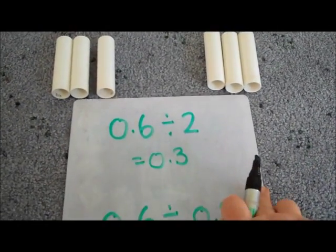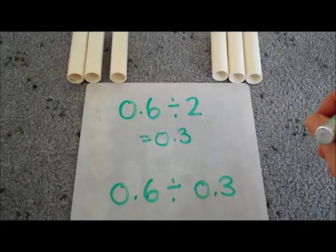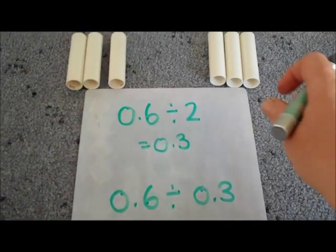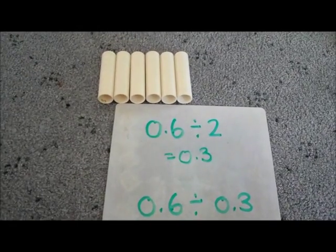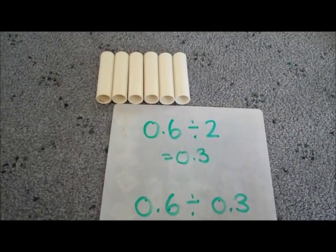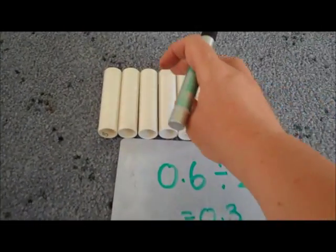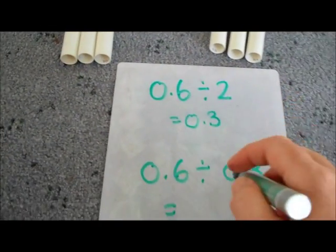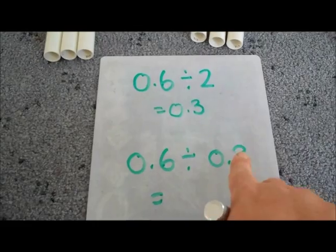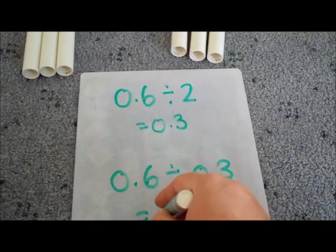But if I said to you 0.6, how many groups of point three are there? Well, there's my point six. How many groups of point three are there? How many groups of three tenths are there? Well, there's one group, there's two groups. So six tenths, how many groups of three tenths is two.